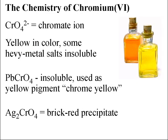The other common oxidation state is chromium(VI). The best examples include chromate and dichromate ions. Chromate is CrO₄²⁻ and is yellow in color. Many heavy metal chromates are insoluble — for example, lead chromate is insoluble and has been used as a yellow pigment called chrome yellow. Barium chromate is also insoluble, and silver chromate is a brick-red precipitate.